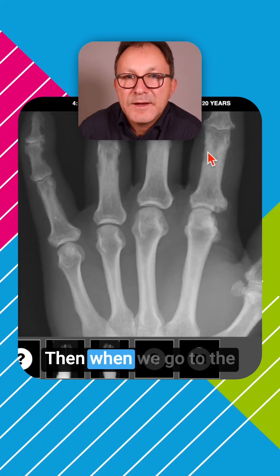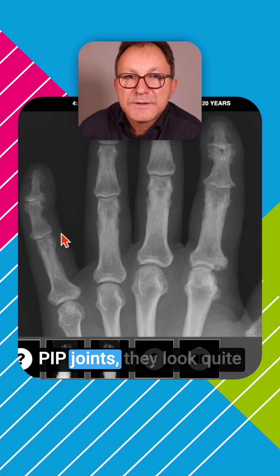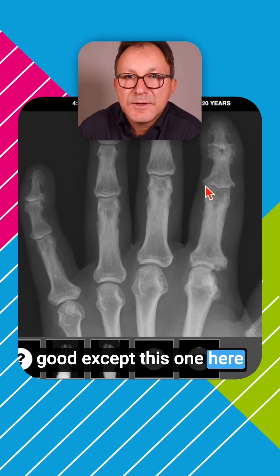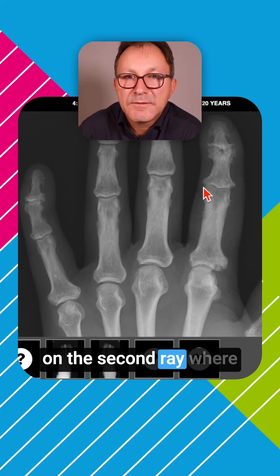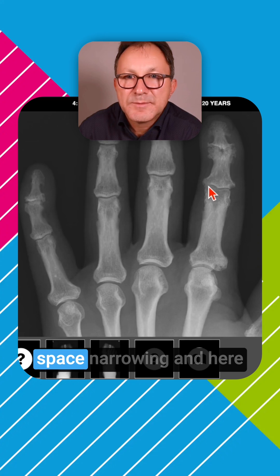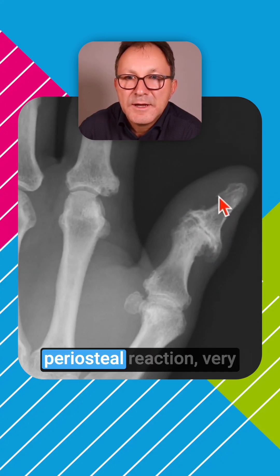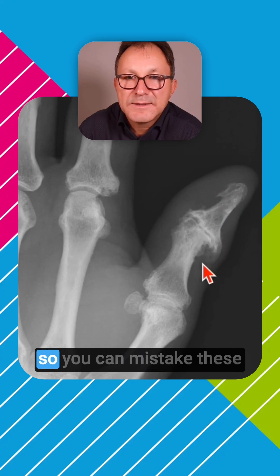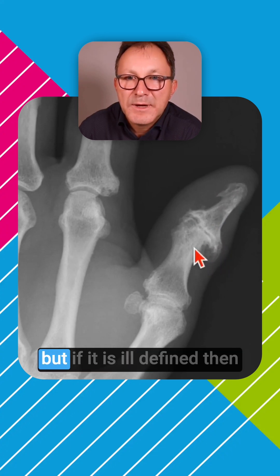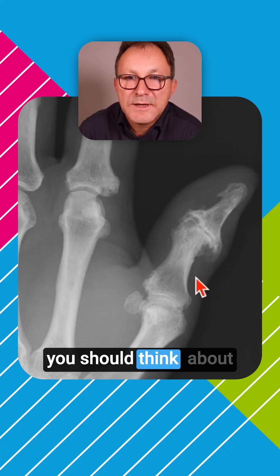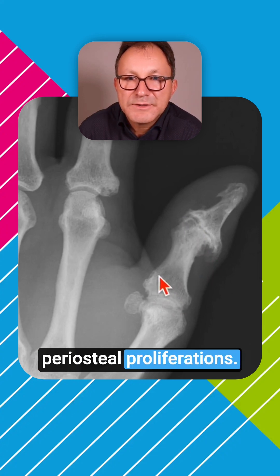Moving to the PIP joints, they look quite good except this one on the second ray, where we see joint space narrowing and a very severe periosteal reaction — very large osteophyte-like outgrowths. You can mistake these changes for osteophytes, but if they are ill-defined, you should think about psoriatic proliferations.